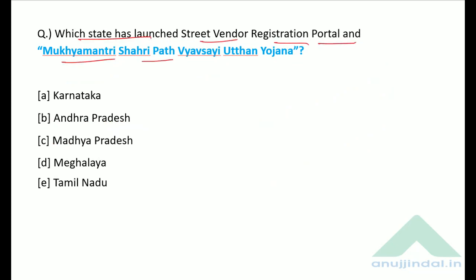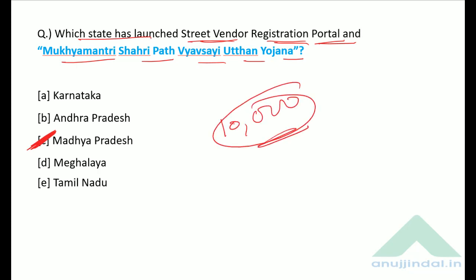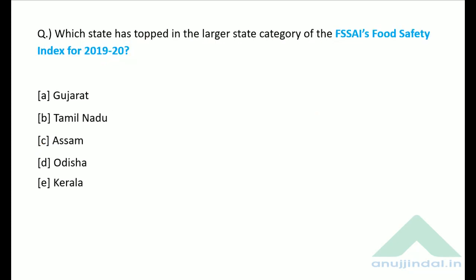The Mukhyamantri Shahri Pat Vyavsayi Utthan Yojana — a Street Vendor Registration Portal — was launched by the Government of Karnataka. As per the Atmanirbhar Bharat announcement, street vendors will be provided a one-time loan of Rs. 10,000 to revive their businesses.